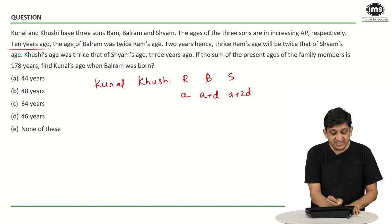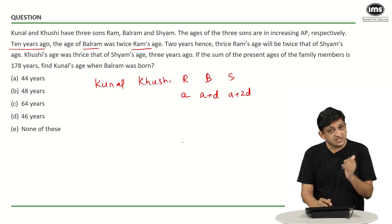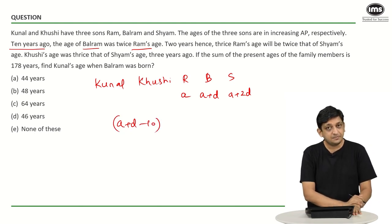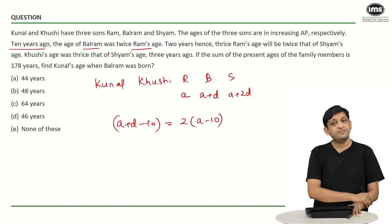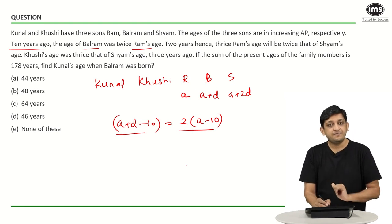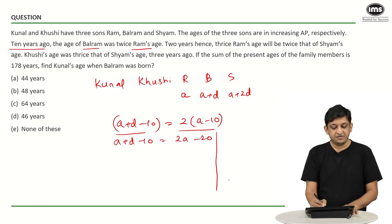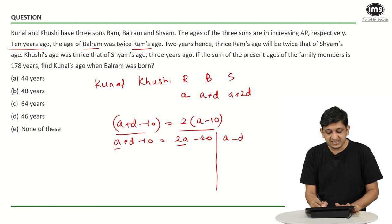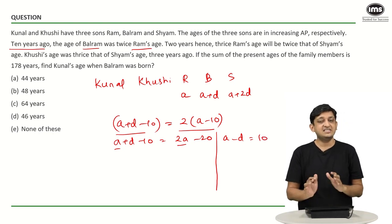Simplifying: A plus D minus 10 equals 2A minus 20, which gives A minus D equals 10 — that is our first equation. For the second condition: 2 years hence, three times Ram's age equals twice Shyam's age. Ram's age in 2 years is A plus 2, and Shyam's age in 2 years is A plus 2D plus 2. So 3(A + 2) equals 2(A + 2D + 2), giving 3A plus 6 equals 2A plus 4D plus 4, which simplifies to 4D minus A equals 2 — our second equation.